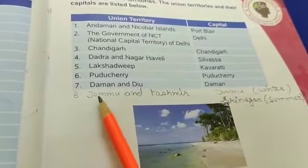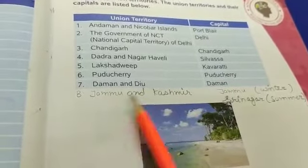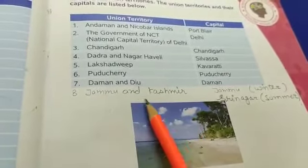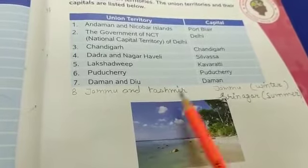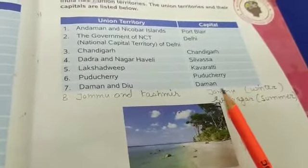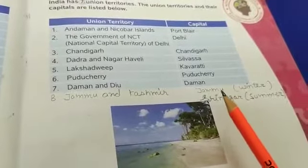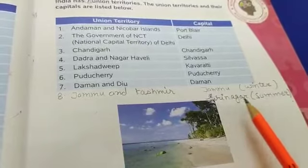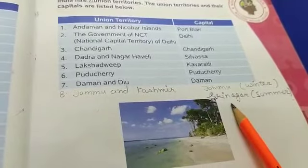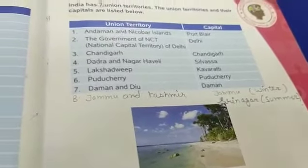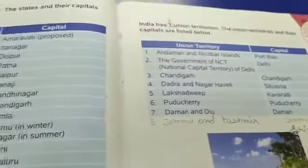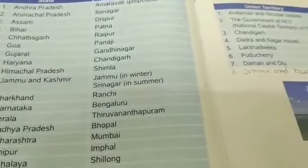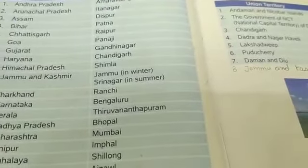The eighth union territory is Jammu and Kashmir — it is the latest union territory. The capital in winter is Jammu and in summer is Srinagar. I hope you understand these pages. Thank you.